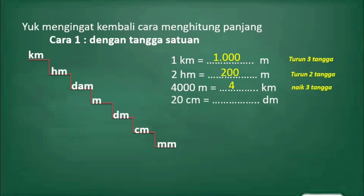Selanjutnya ada lagi. Dua puluh sentimeter sama dengan berapa desimeter? Dari sentimeter ke desimeter naik satu tangga, itu artinya dibagi dengan sepuluh. Dua puluh dibagi dengan sepuluh hasilnya adalah dua. Betul.